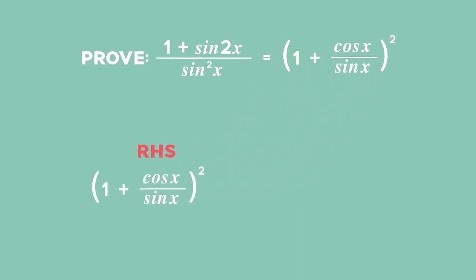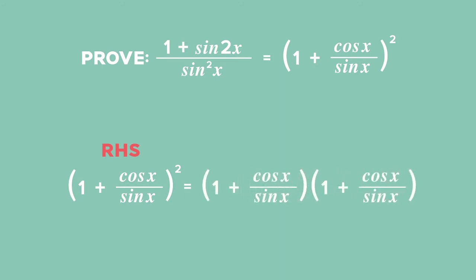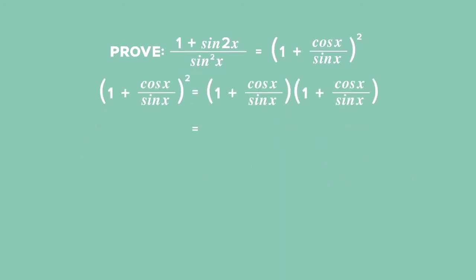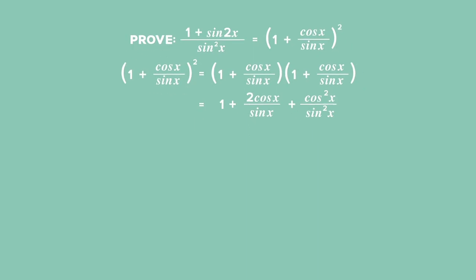Expand 1 plus cos x over sin x all squared by squaring the terms within the brackets. You get 1 squared plus 2 cos x over sin x plus cos squared x over sin squared x when you expand the brackets and add like terms.